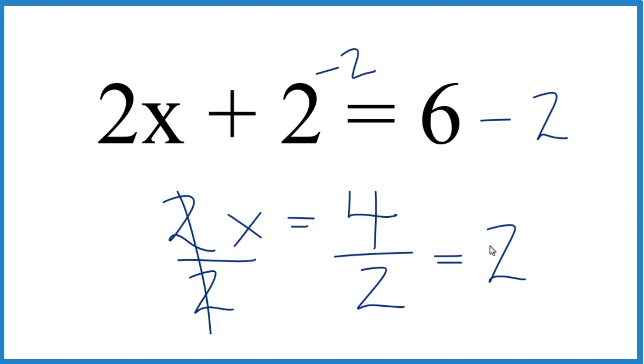So in answer to the question, when we solve the equation here for x, 2x plus 2 equals 6, x equals 2. And if you look at this, 2 times 2 is 4. 4 plus 2, that equals 6. 6 equals 6. So this is the correct answer.